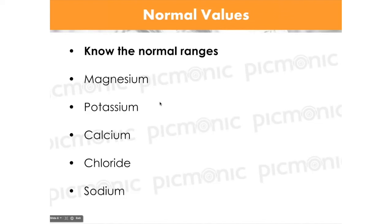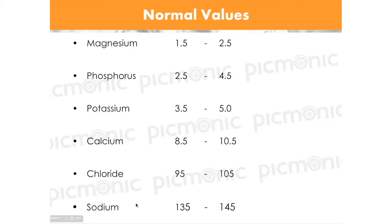One of the most important things is you have to know the normal ranges of all these lab values. I've listed five here organized from smallest to largest by volume in the extracellular space: magnesium, phosphorus, potassium, calcium, chloride, and sodium. If you memorize the normals, you can immediately identify what's abnormal — whether it's high or low.